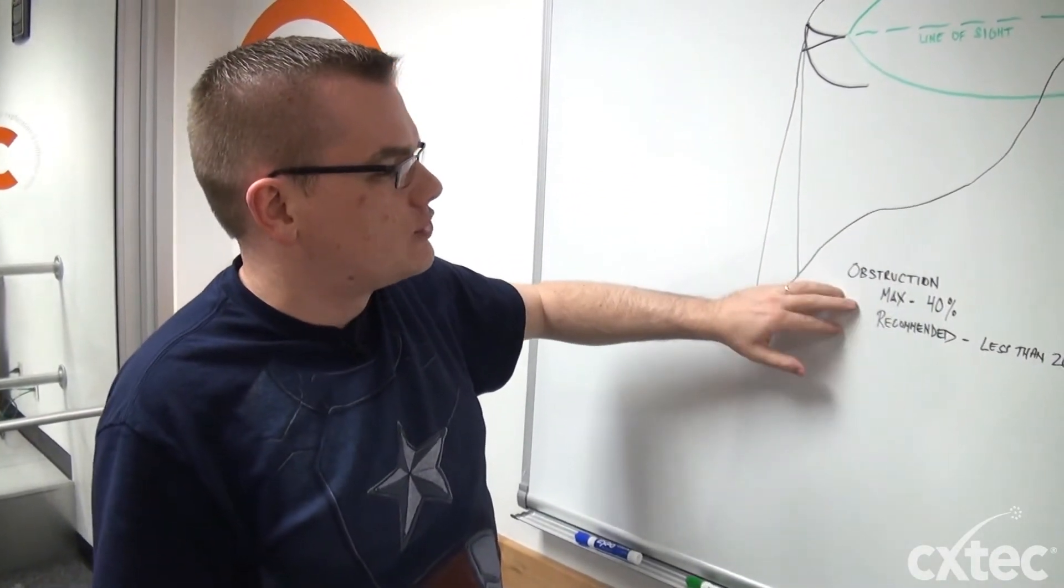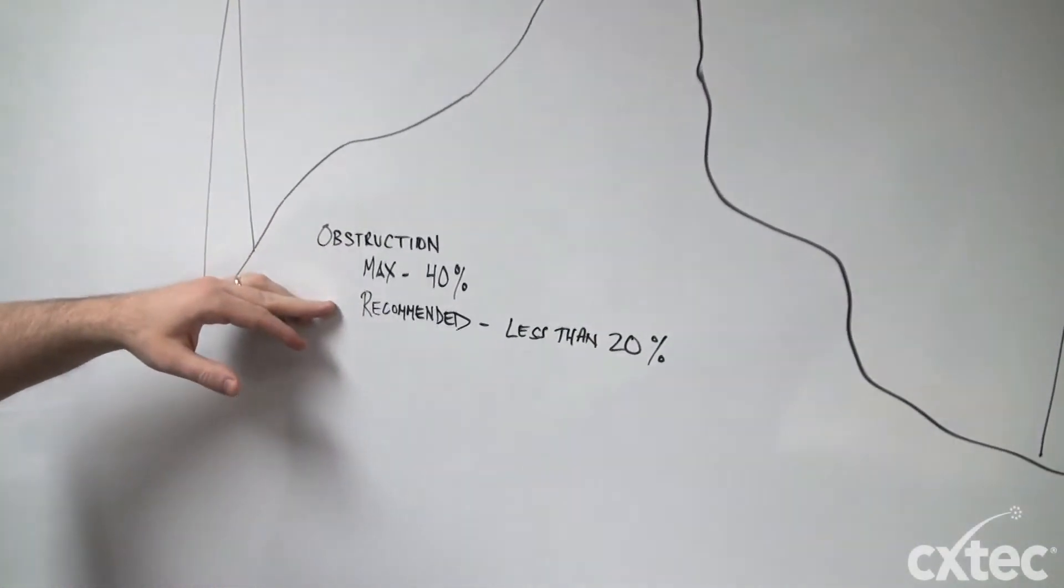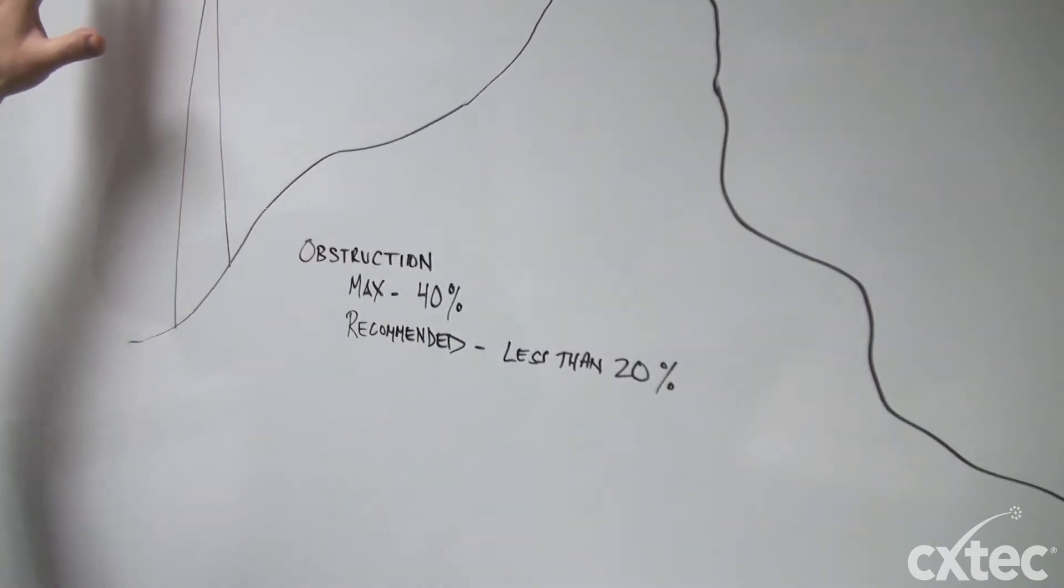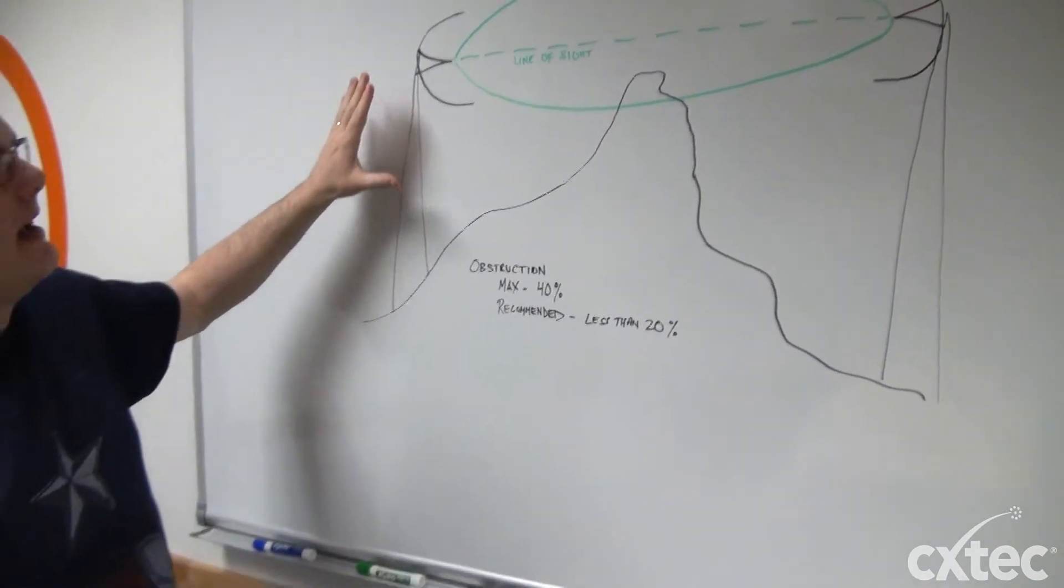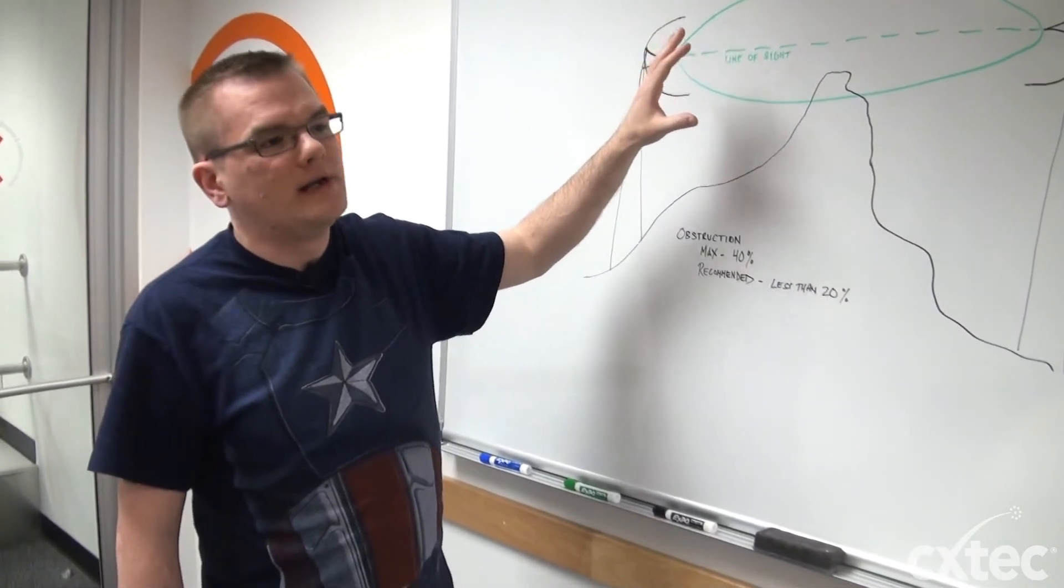But really, the obstruction levels, the max is about 40% obstruction. The recommended is less than 20%. So really, the point of this is that you want to have your antennas high enough to accommodate any obstructions where you could run into situations...